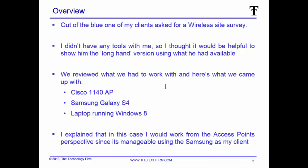We reviewed what we had to work with and here's what we came up with: a Cisco 1140 AP running in autonomous mode, a Samsung Galaxy smartphone, and a laptop running Windows 8. This is not something you'd have to go out and buy — you probably have stuff like this already. The key is to make sure you have an access point that is manageable. I would work from the access point's perspective since it's manageable, using my Samsung as the client.